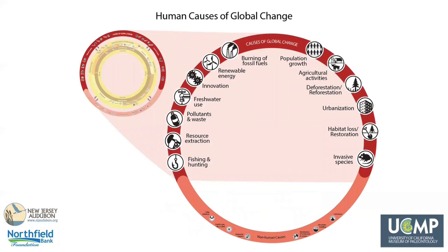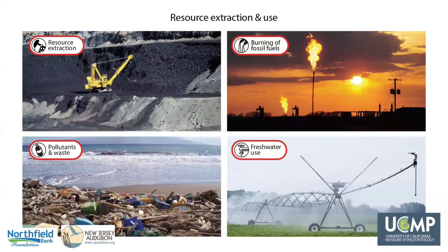Having briefly surveyed the non-human causes, we'll now examine some of the human causes of change, which are necessary for understanding how the Earth system has changed over the last century. Humans, especially over the last century, have dramatically changed the Earth system by extracting and using Earth's resources to power and sustain modern life. Fossil fuels have been used as our primary source of energy, which increases greenhouse gases in our atmosphere. Use of fossil fuels is the primary cause of climate change today. Resource extraction and the burning of fossil fuels also release pollutants and waste that contaminate the environment and are harmful to life.